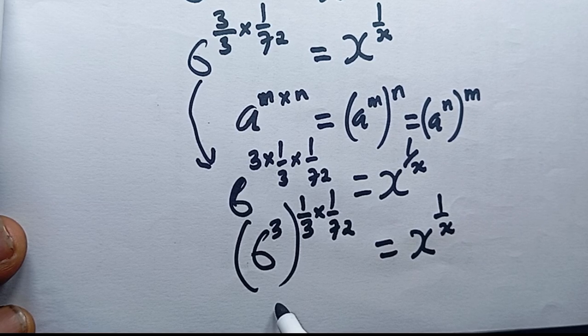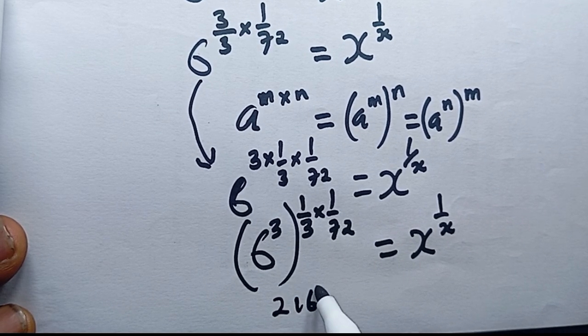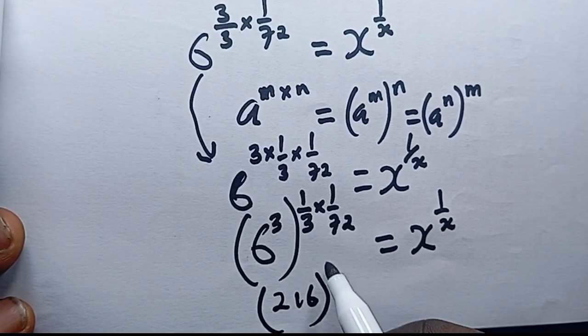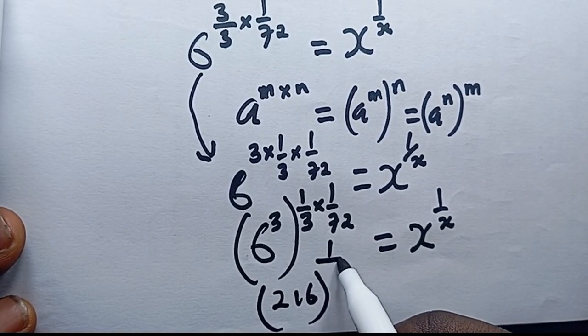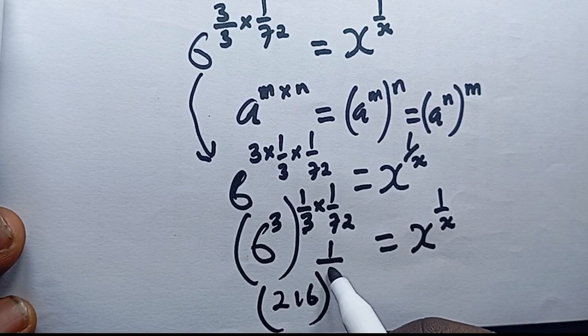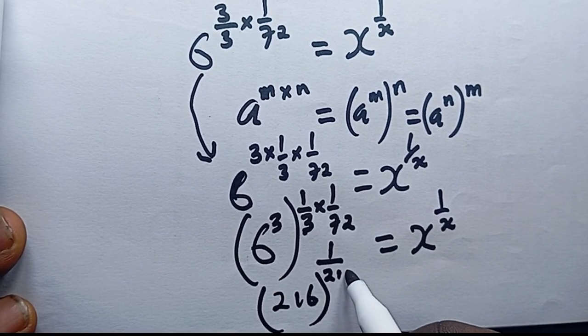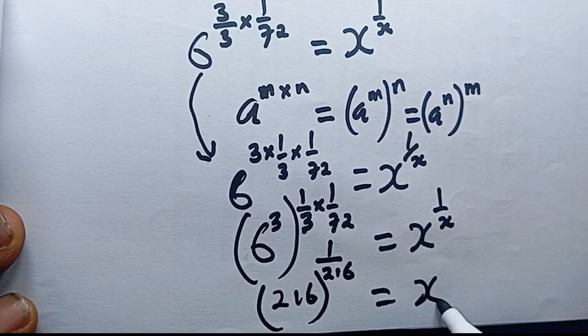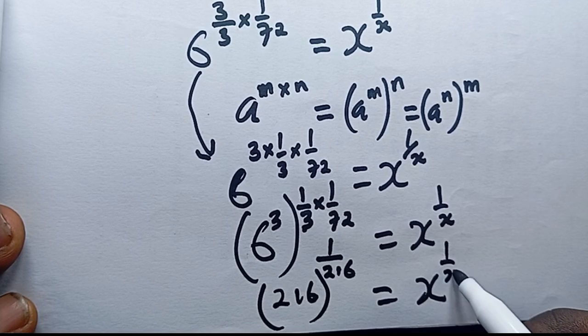At this point, 6 power 3 is 216. Then 1 times 1 here is 1, and 3 times 72 will give you 216. This is equal to x power 1 over x.